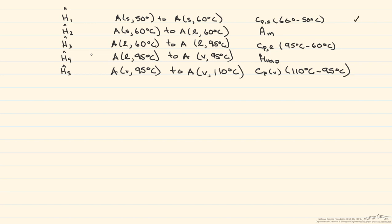Here are the different enthalpies we need to calculate. H1 goes from the solid at 50 degrees to the solid at 60 degrees — sensible heat, so we use the heat capacity. Next, H2 is the phase change: the heat of melting. H3 takes the liquid from the melting point of 60 degrees to the boiling point of 95 degrees C — again sensible heat, using the liquid heat capacity. H4 is the heat of vaporization. Finally, H5 is the sensible heat of bringing the vapor from its boiling point to its final temperature of 110 degrees C, using the vapor heat capacity.